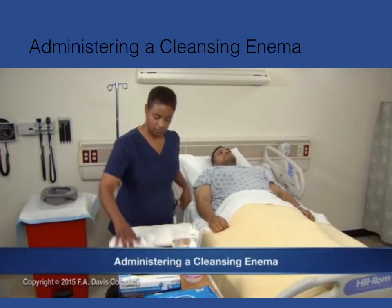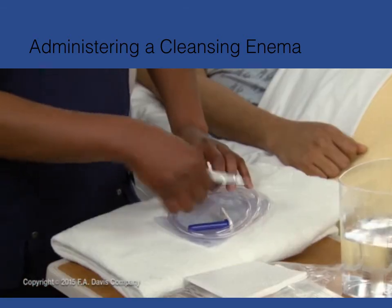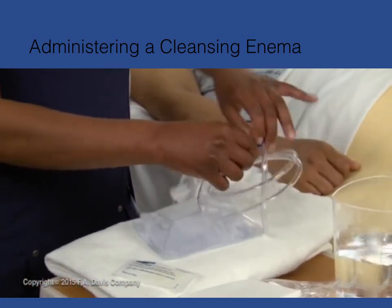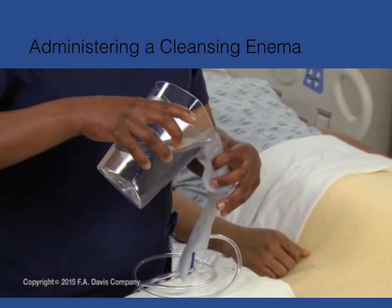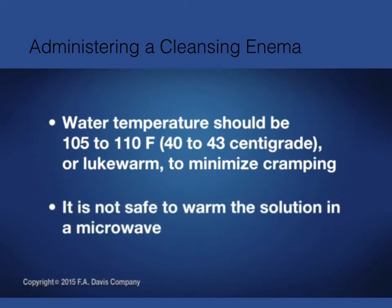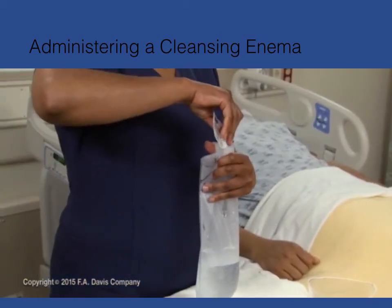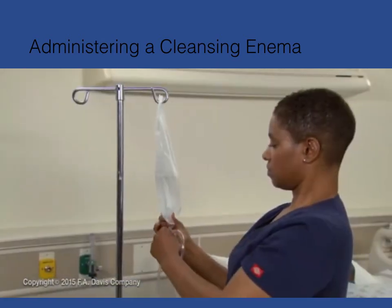When administering a cleansing enema, follow these steps. Place the bedpan or commode near the bed. Open the enema supplies, attach the tubing to the enema pail or solution bag if necessary, and close the clamp. Fill the container with 500 to 1,000 milliliters of warm solution. Check the water temperature with a bath thermometer — it should be 105°F to 110°F (40–43°C) or lukewarm to minimize cramping. It is not safe to warm the solution in a microwave. Add Castile soap if a soap suds enema has been prescribed, and squeeze gently to mix.